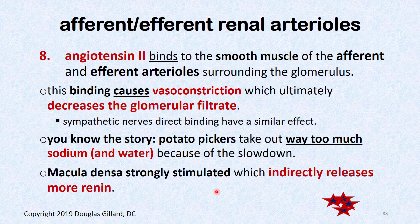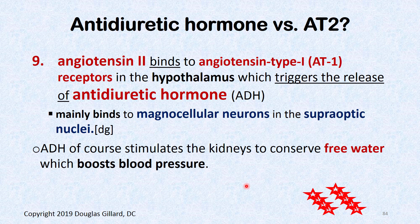Regarding the afferent and efferent renal arteries around the glomerulus, angiotensin II binds to the smooth muscle of these arterioles causing vasoconstriction. This decreases flow into the nephron, reducing filtrate and filtration pressure. The potato pickers — the proximal tubule cells — will pick out too much sodium, making the filtrate low in sodium again, which causes macula densa to freak out and indirectly stimulate renin release once more.